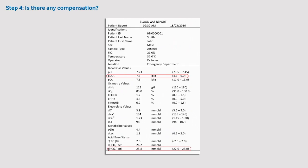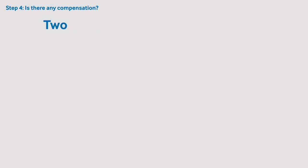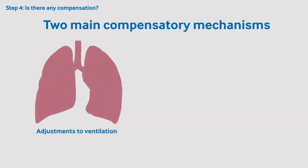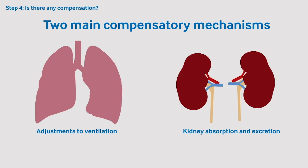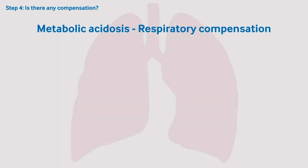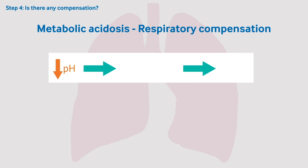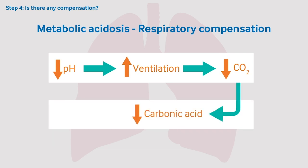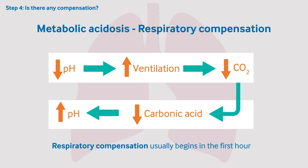When acidemia or alkalemia develop, the regulatory mechanisms to maintain a normal pH kick in and attempt to compensate for the change. The two main compensatory mechanisms are adjustments to ventilation or adjustments to kidney absorption and excretion. If a patient has a metabolic acidosis, then the bicarbonate system of maintaining homeostasis has been overwhelmed. Therefore, in order to reduce the acid burden in the blood, ventilation increases and this drives off carbon dioxide. This will reduce the carbonic acid in the blood and therefore increase the pH. Respiratory compensation usually begins in the first hour.